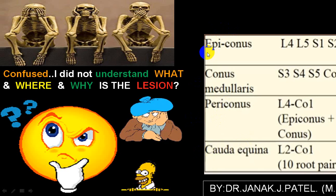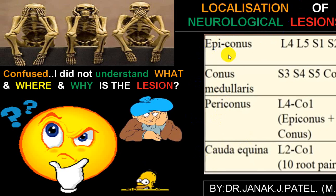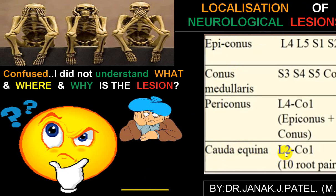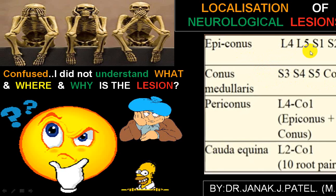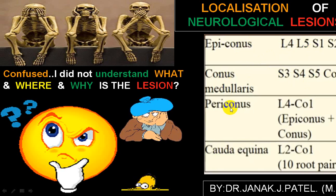To explain that particular part, there are different portions of the lower part of the spinal cord. We call epiconus, conus medullaris, periconus, and cauda equina. Cauda equina is 10 pairs of roots starting from L2 — four lumbar, five sacral, and one coccygeal. All those roots together in the lower part are called cauda equina. These are the different portions of the lower part of the spinal cord.